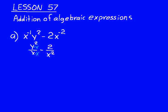And so when we do that, we end up with x^2 as our denominator and then we'll have xy^2 - 2 as the numerator.